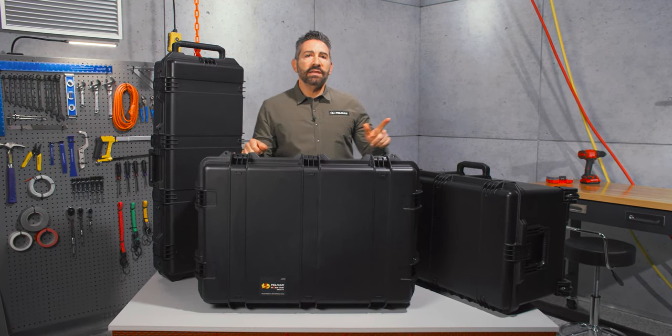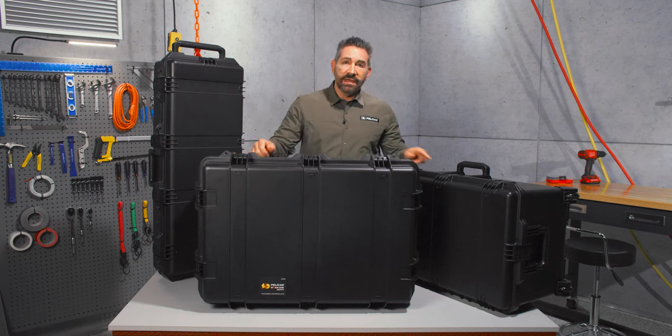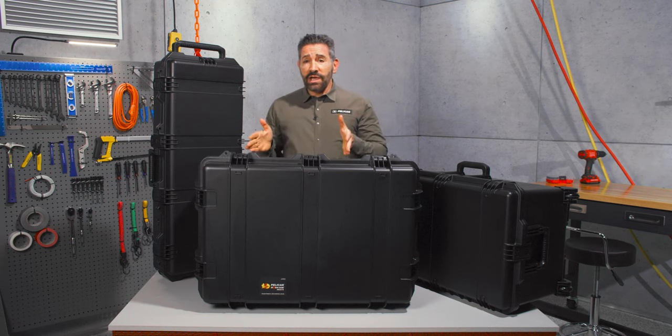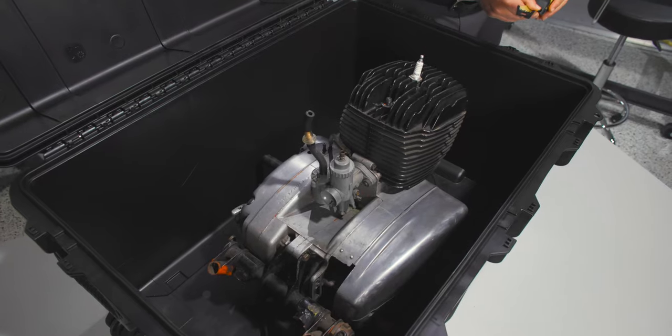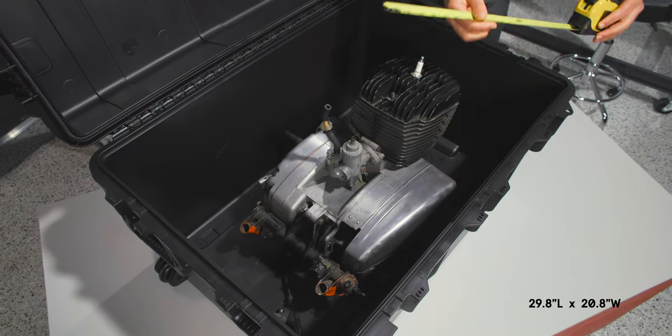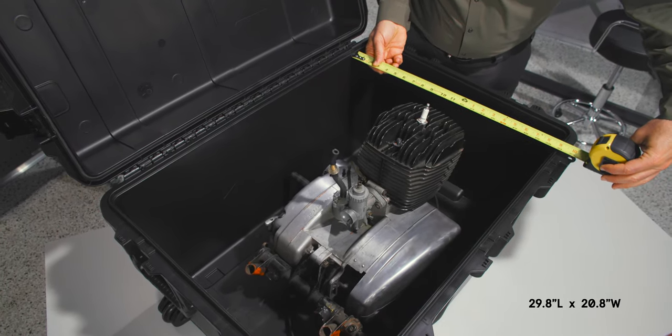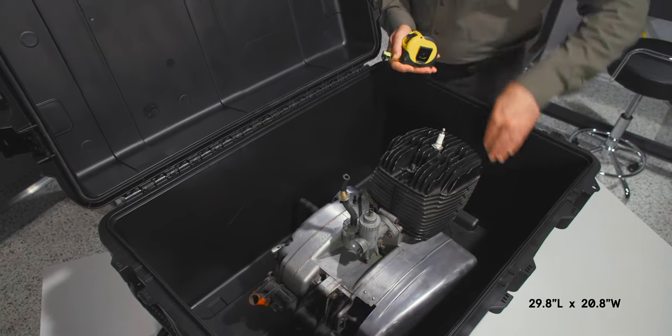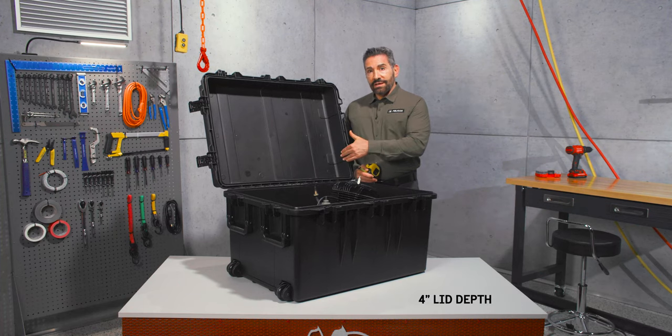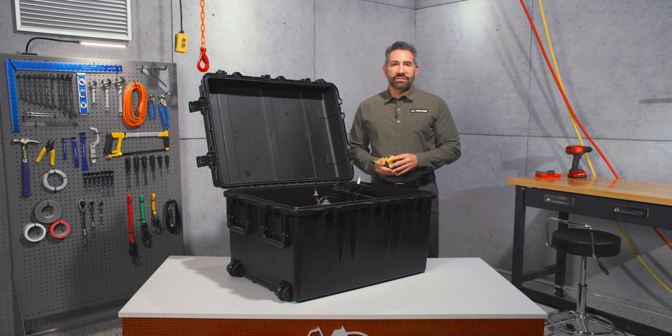It sits in between the IM2975 and the IM3100, but it was built as a large size transport case. Its interior dimensions are 29.8 inches in length, 20.8 inches in width, and 13.75 inches of bottom depth. The lid adds 4 inches for a total of 17.8 inches.